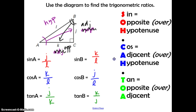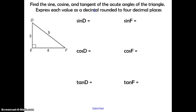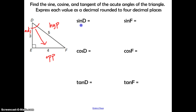Now we'll move on to a problem that gives us actual side lengths instead of variables. It asks us to find the sine, cosine, and tangent of the acute angles — there are two acute angles in every right triangle, so we'll do this twice — and express each value as a decimal rounded to four decimal places. Starting with angle D: side 5 is opposite the right angle, so it's the hypotenuse; the opposite side of angle D and the adjacent side are the other two sides. Using SOHCAHTOA: sine of D equals opposite over hypotenuse, cosine of D equals adjacent over hypotenuse, and tangent of D equals opposite over adjacent.